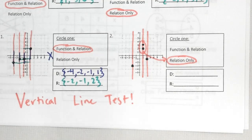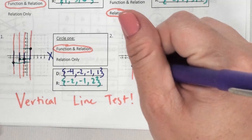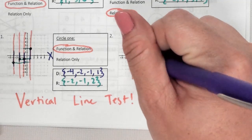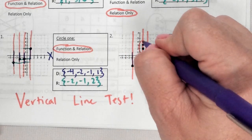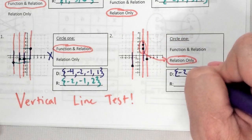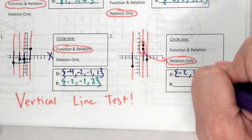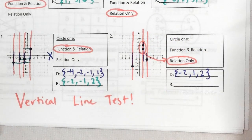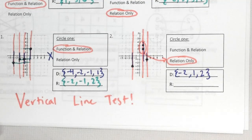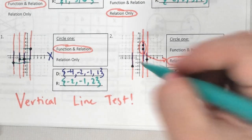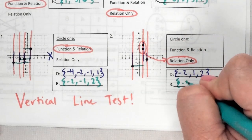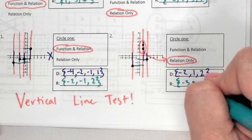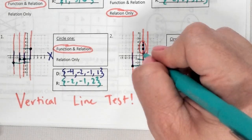Let's look at number two — same concept. Farthest left is negative 2, then two of them at 1, and one at 2. Looking at height: lowest is negative 3, then negative 1, then 2 and 3.